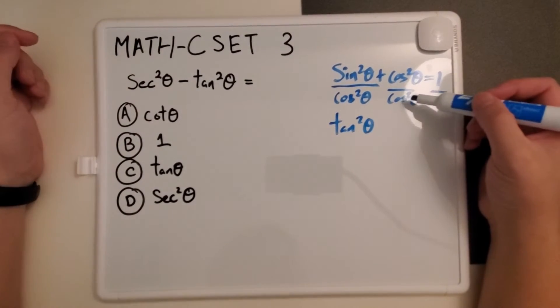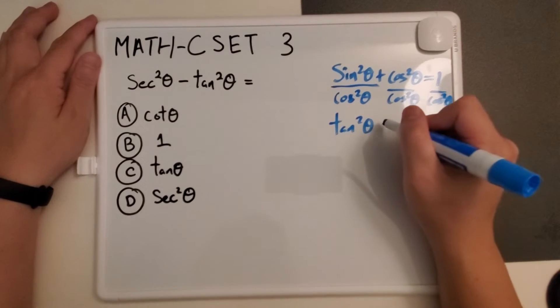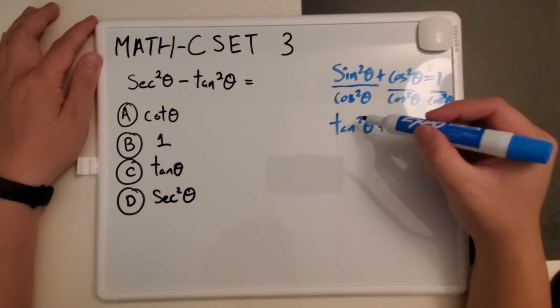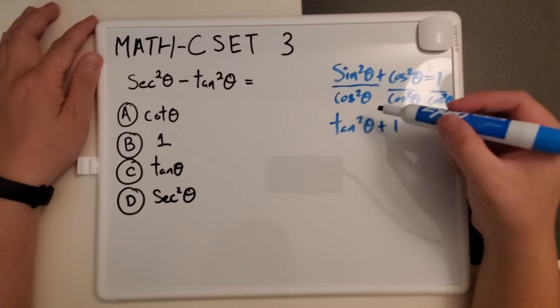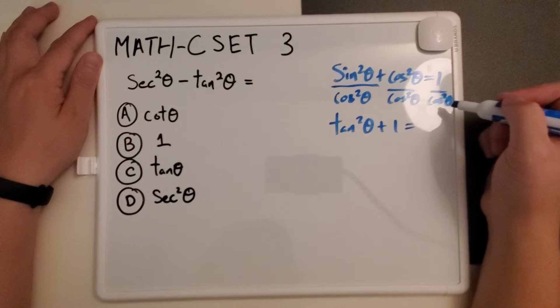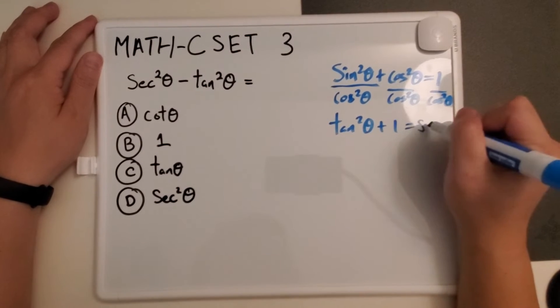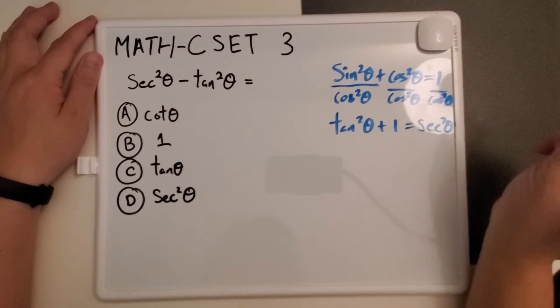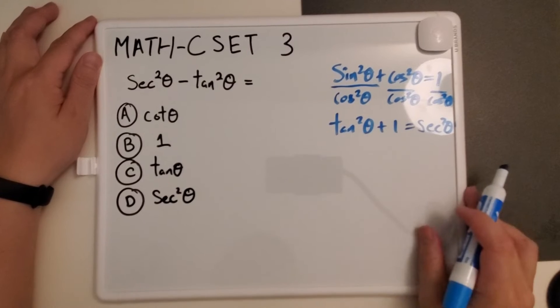So this becomes tangent squared theta plus 1 equals to 1 over cosine squared, equals to secant squared theta. Now we can use this identity, this trig identity here, to help us simplify our original problem.